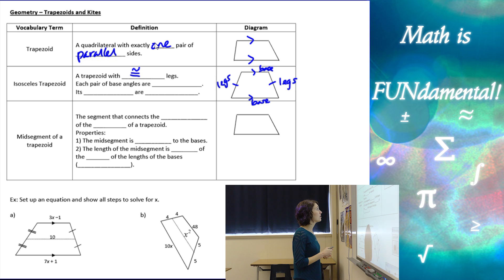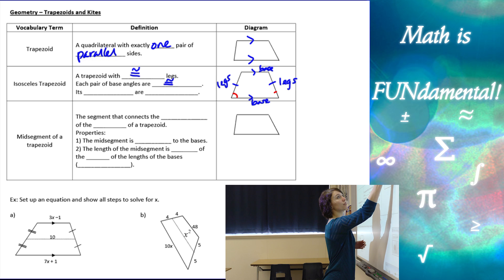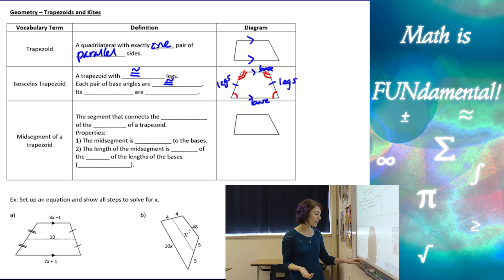Each pair of base angles of an isosceles trapezoid are congruent. So here, this one's congruent to that one and these two are congruent. Remember base angles doesn't necessarily just mean the ones on the bottom. It means the angles that are connected to the bases and in a trapezoid we have two bases, the two sides that are parallel to each other.